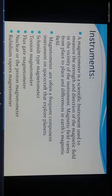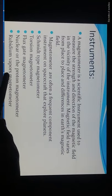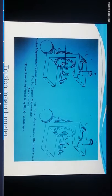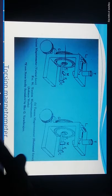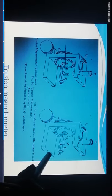Instruments: A magnetometer is a scientific instrument used to measure the strength and direction of the magnetic field in the vicinity of the instrument. The magnetic field varies from place to place and differences in magnetic field are measured. Types of magnetometers include: torsion magnetometer, flux gate magnetometer, nuclear and proton magnetometer, and rubidium vapor magnetometer. The torsion magnetometer measures vertical and horizontal force components.